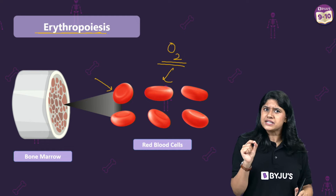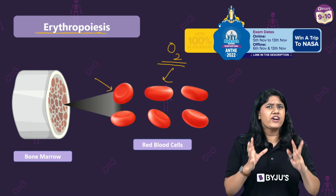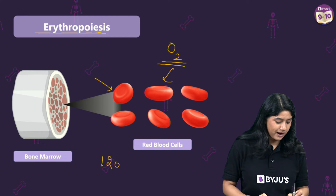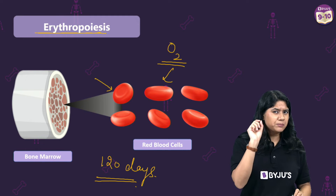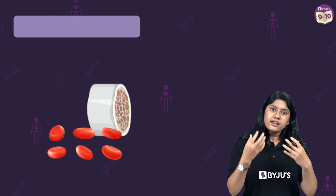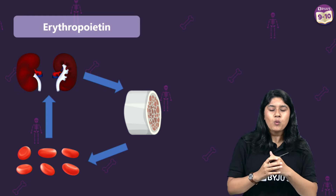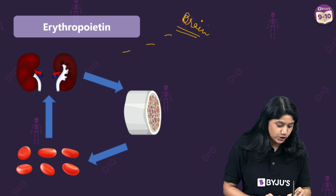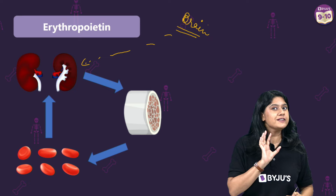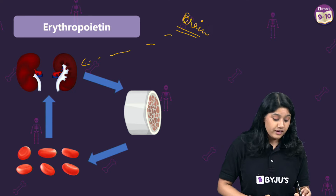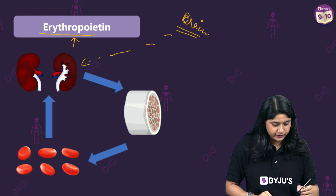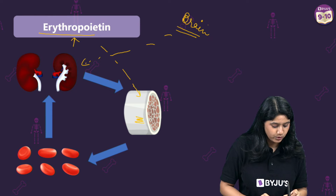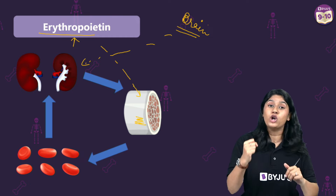Now let's understand how our body sends signals and how it knows when to start the production of RBCs. We know that RBCs have a lifespan of about 120 days. So if the RBC numbers in our body go down, our smart brain recognizes this and sends signals to the kidney to prepare a special hormone — erythropoietin. This hormone then acts on the bone marrow, sending a signal that it's time to start the production of RBCs.